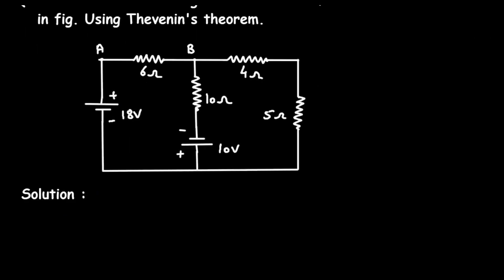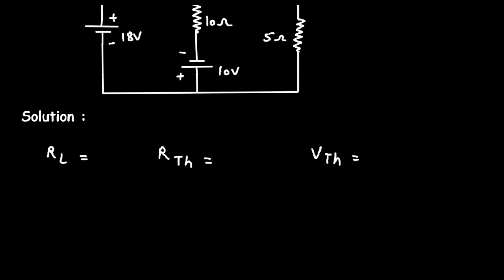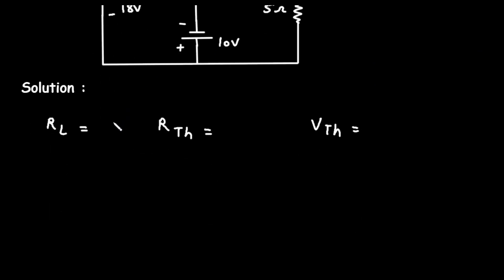Solution. For Thevenin's Theorem, we need the value of RL, RTH, and VTH. Here in this circuit, we have the value of load resistor RL and it is 6 Ohm. The value of RTH is unknown and the value of VTH is unknown.